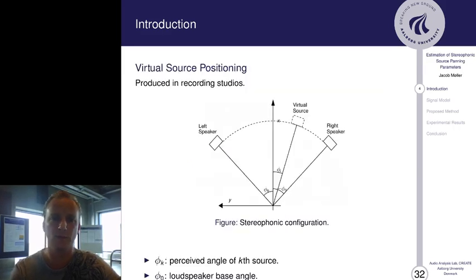So what is a source? If we look at the figure here for a stereophonic configuration, we have a left speaker and a right speaker, and one source in this example, called virtual source, which can move on an arc from the left to the right speaker, and vice versa. Phi k is the angle to the virtual source when the listener is facing the x-axis.